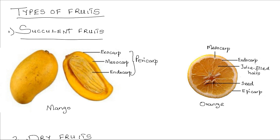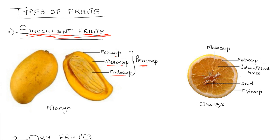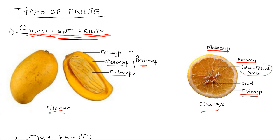First, we can have the nature of the ovary wall, that is of the fruit wall. If it is succulent, that is one in which the pericarp is fleshy and juicy with distinct three walls — the outer exocarp, middle mesocarp, and the inner endocarp — for example like mango or orange, where you have the distinct outer epicarp, the white mesocarp, and the inner endocarp which consists of juice-filled hairs. So these two are examples of succulent fruits, also known as juicy fruits. What characterizes them is that in the pericarp there are three distinct walls.